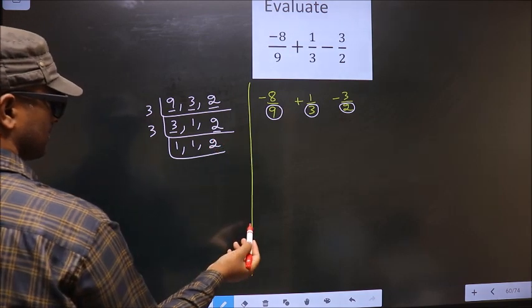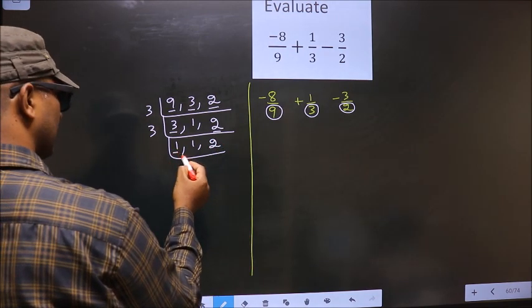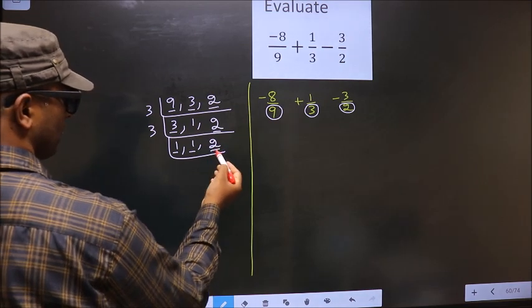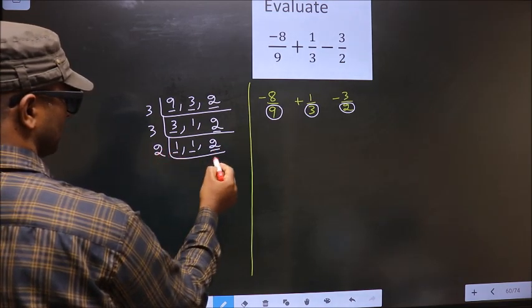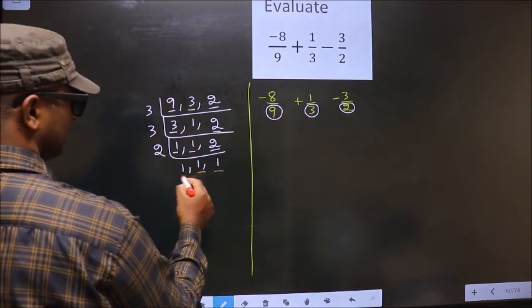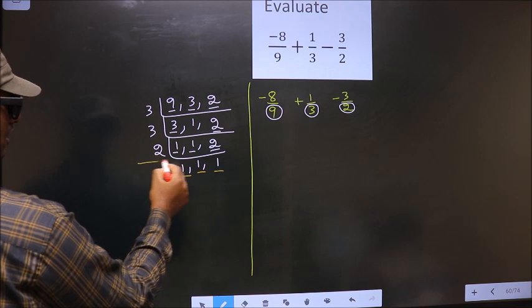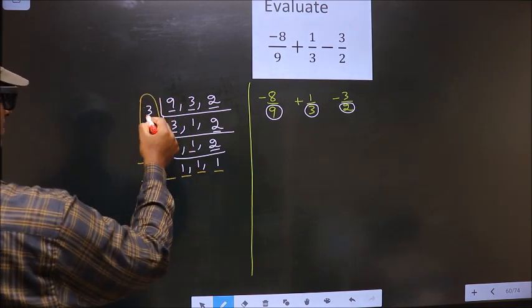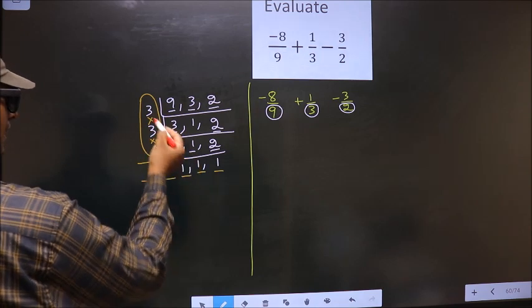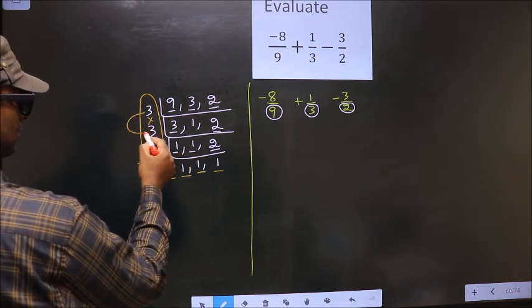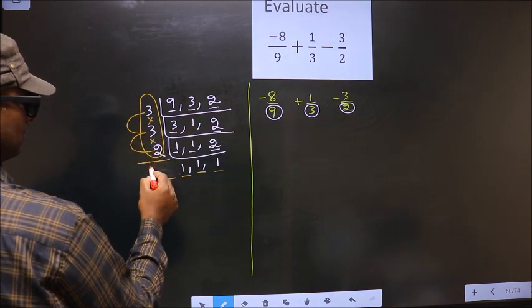The other number 2 not divisible, so you write down as it is. We got 1 here and here, so focus on to the other number that is 2. 2 is the prime number, so 2, 1 is 2. We got 1 in all the 3 places. So our LCM is the product of these numbers. That is 3 into 3 into 2. So 3 into 3, 9 into 2, 18.